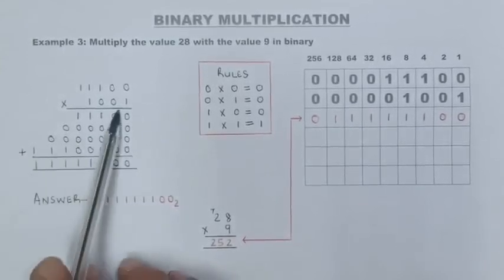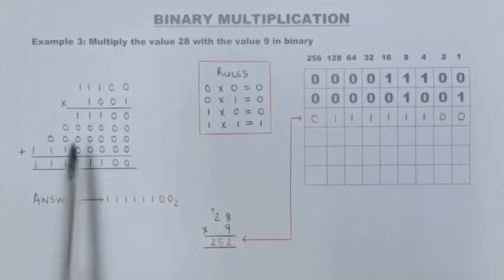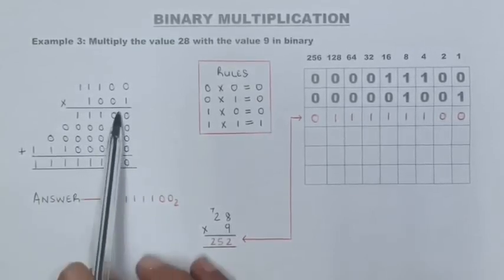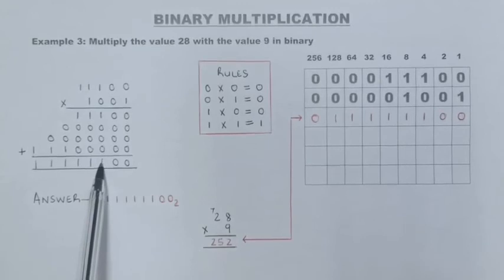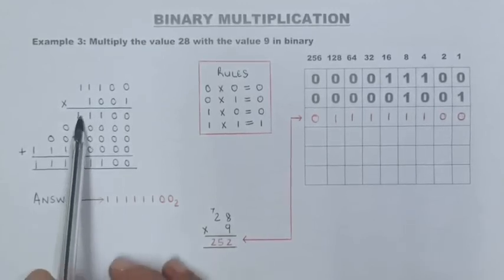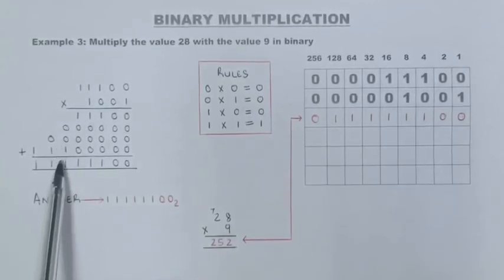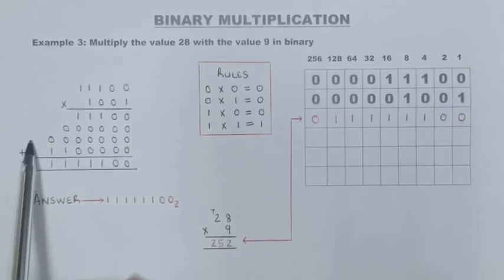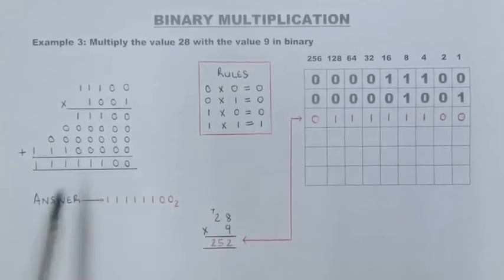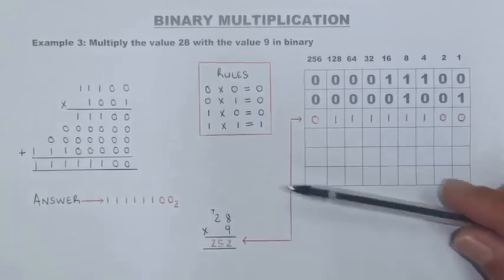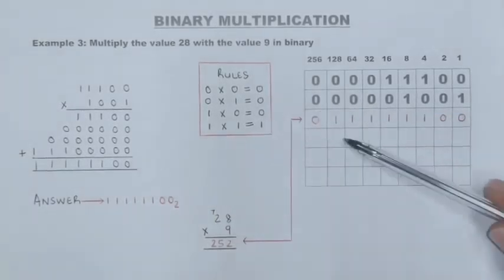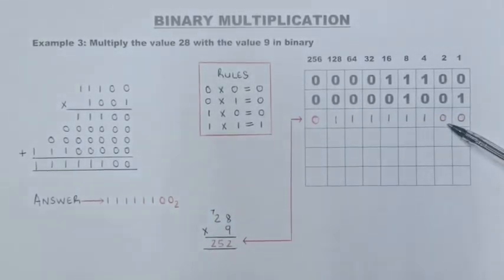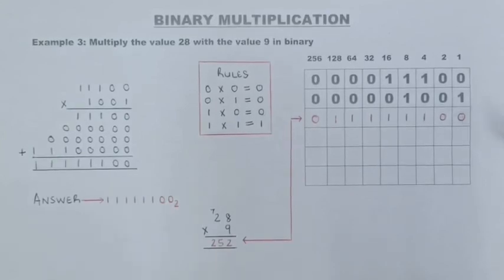Lastly, add those binary values. Zero, zero, one plus zero is one, one plus zero is one, one plus zero is one, zero plus one is one, zero plus one is one, and one plus zero is one. That is your final answer for 28 multiplied by 9. Now check your answer — if it matches the value from the code system, you have done the calculation correctly.